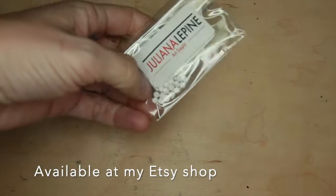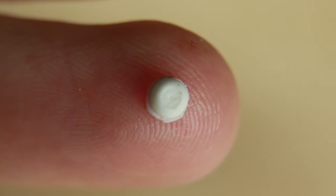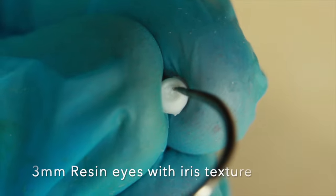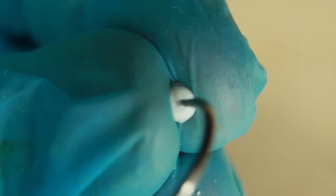These are 3mm resin eyes that already have the iris texture ready to go. First, I clean up any air bubbles that might be in my way later.